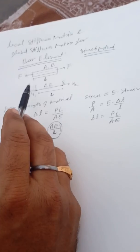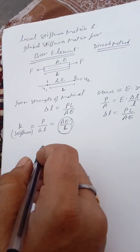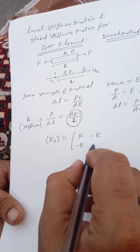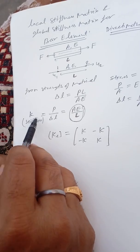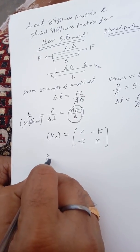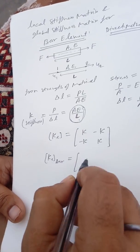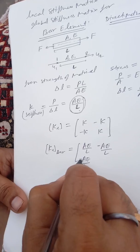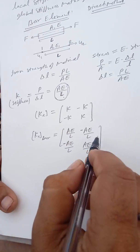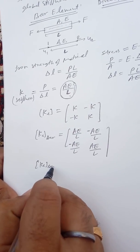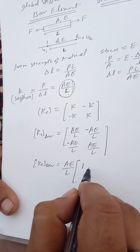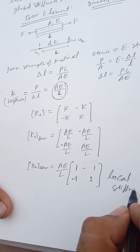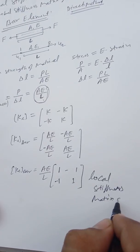For a single element, the local stiffness matrix — similar to the spring element — K equivalent is equal to [K, -K; -K, K]. Putting K = AE/L for the bar element, K equivalent for the bar is AE/L multiplied by the matrix [1, -1; -1, 1]. This is the local stiffness matrix of the bar.